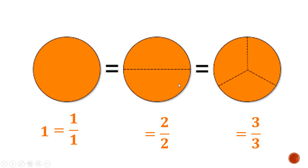Similarly, a whole circle is 1. A circle divided into 2 equal parts with all 2 parts present gives 2 over 2, which is the same as 1. And in the rightmost circle, divided into 3 with all 3 parts, it's 3 over 3. So 1 can be represented as 1 over 1, 2 over 2, 3 over 3, 5 over 5, 10 over 10, or 100 over 100 — any number over itself.